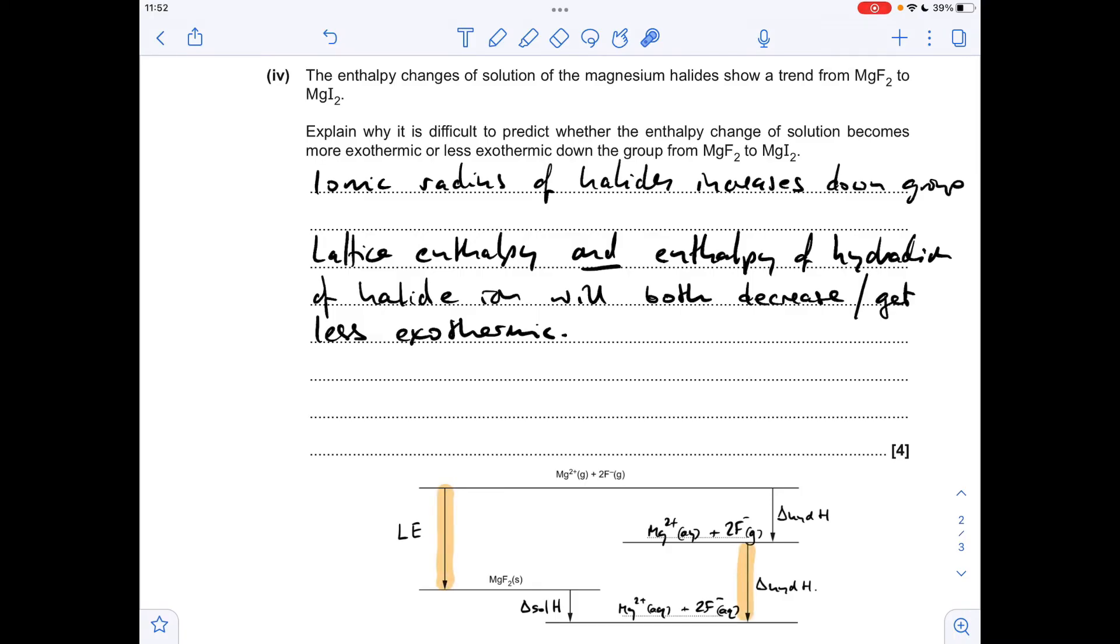So factoring that into the cycle, these two arrows are going to get shorter. If the lattice enthalpy was affected more than the hydration enthalpy of the halide ion, this arrow would shrink more significantly than that one, so it's going to pull this line up and the enthalpy change of solution is going to get more exothermic.